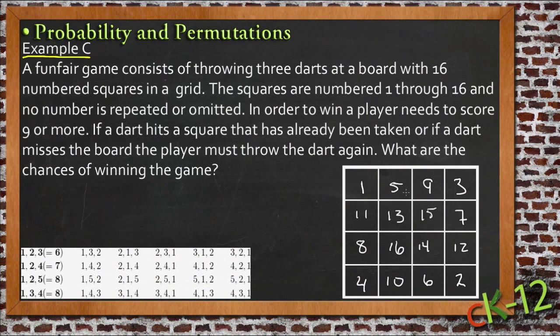Every time you hit a number it stays. If you hit the same number again they have you re-throw, and if you miss the board you re-throw. So really what it means is you're going to get three numbers, and if those three numbers add up to be more than nine, you win.